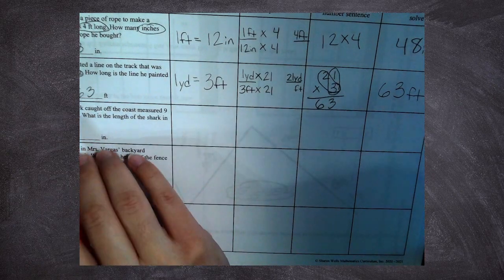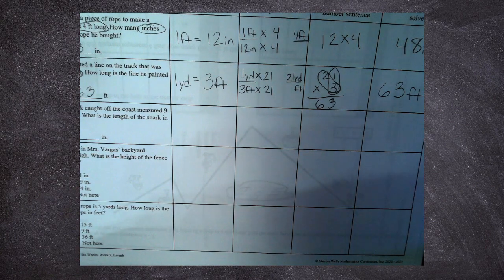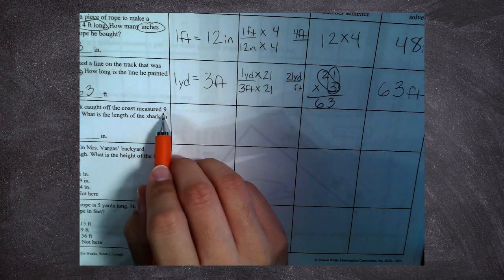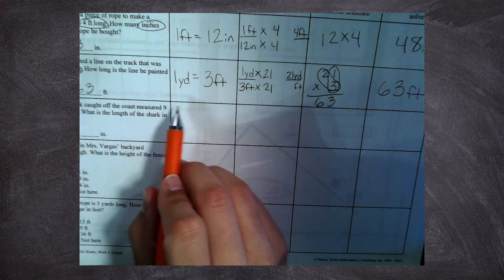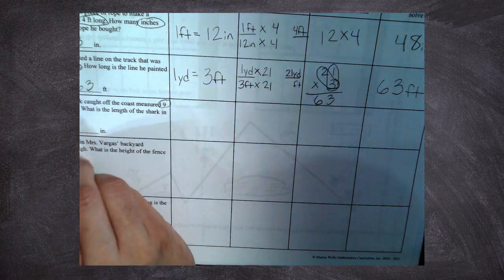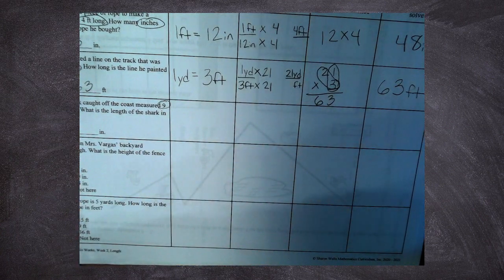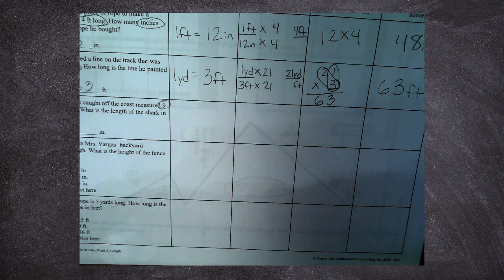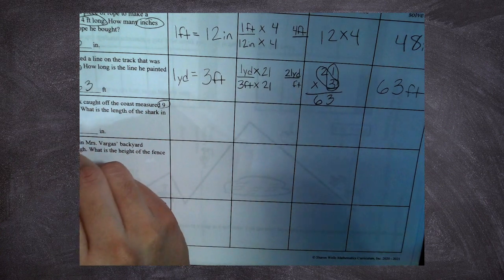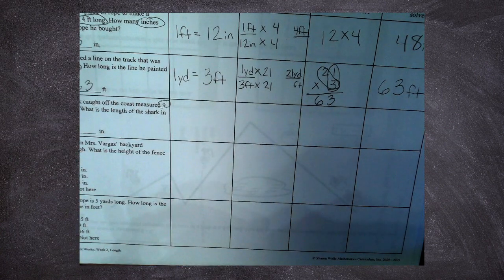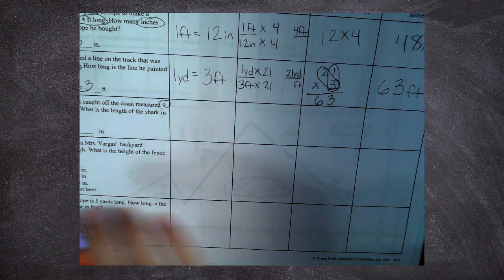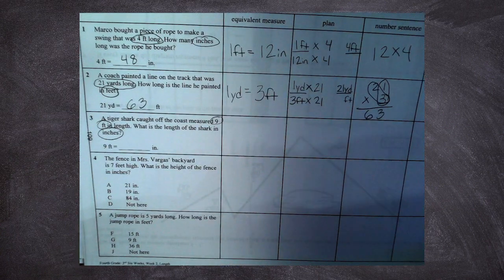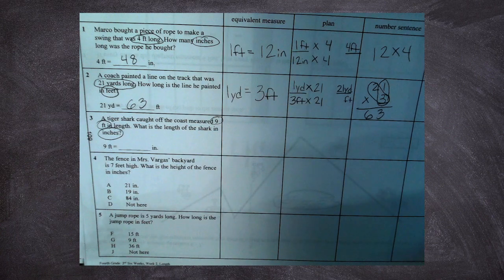Number three says a tiger shark caught off the coast measured nine feet. Measured this shark, it's nine feet. That's a big shark. What is the length of the shark in inches? So even though they measured it, they kind of made a mistake there and they should have measured it in inches, so they want us to fix that for them. That's fine, not a big deal.